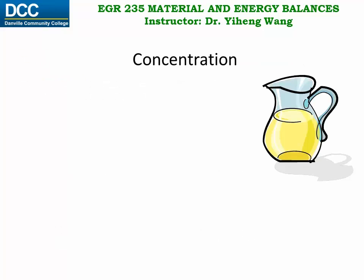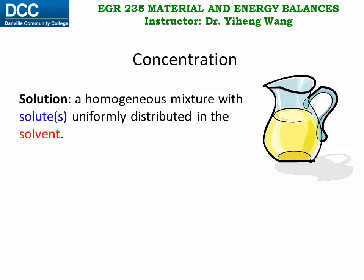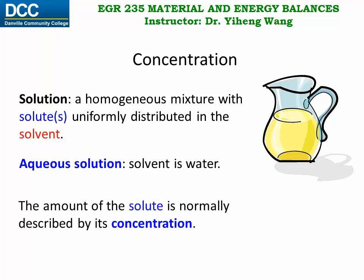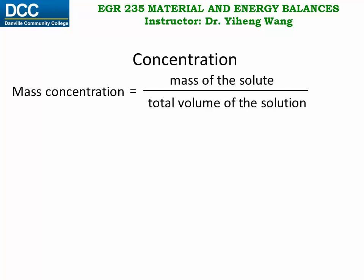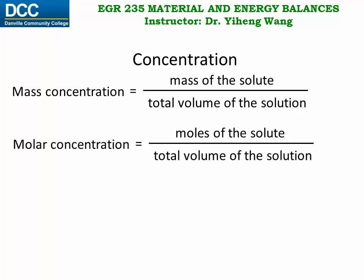Oftentimes a mixture takes the form of a solution, which is a homogeneous mixture with a solute or multiple solutes uniformly distributed in the solvent. If it's an aqueous solution, the solvent is water. In a solution, the amount of solute is normally described by its concentration. In this class, we define mass concentration as the mass of the solute divided by the total volume of the solution, and molar concentration as the number of moles of the solute divided by the total volume of the solution.